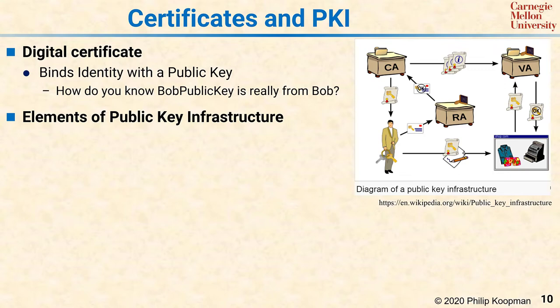There's a thing called a digital certificate. A digital certificate binds identity with a public key. So if Bob says 'my name is Bob and here's my public key,' Bob not only sends you the public key, but also sends you a certificate that says this certificate is owned by Bob — and it's the Bob you think it is. This certificate is also associated with the public key. So if you can trust the digital certificate, you know that whoever says they're Bob is really Bob, and more importantly, that's their key.